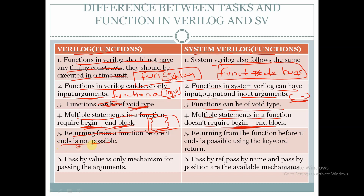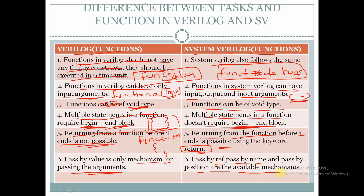Returning from a function before it ends is not possible in Verilog — before the function ends we cannot exit. Whereas in SystemVerilog we can exit from a function before it ends by using the keyword 'return'. In Verilog, pass by value is the only mechanism for passing arguments, whereas in SystemVerilog, pass by reference, pass by name, and pass by position are also available mechanisms. These will be covered in upcoming slides.